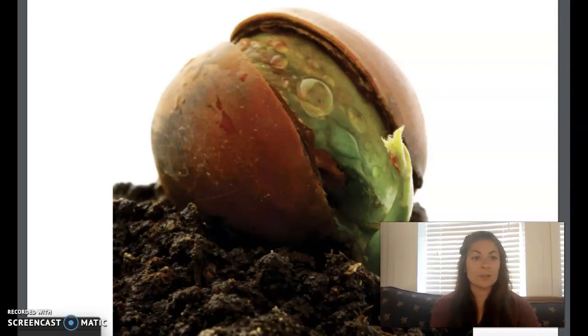Seedlings need just the right amount of water, warmth, and sunshine to grow. With the right conditions, seedlings develop into young trees with roots, a trunk, branches, and leaves. Young trees are called saplings.